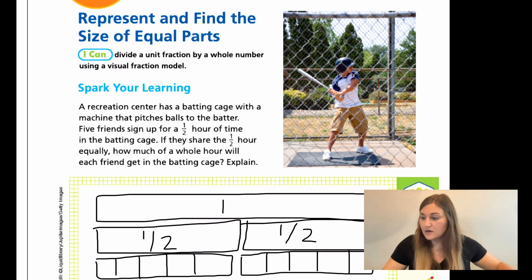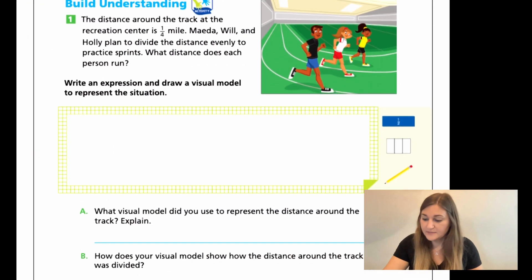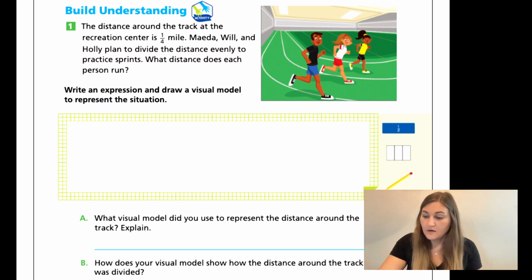Alright, let's go ahead and flip the page here. Now we're moving into page 244. We have a word problem that says the distance around the track at the recreation center is one fourth of a mile. Miera, Will and Holly plan to divide the distance evenly to practice sprints. What distance does each person run? This is a very similar problem that we just did. We're looking for the whole, but this time we have one fourth of a mile. So one fourth is our base instead of the half. And this time we have three friends instead of five friends. So the numbers are changing, but it's essentially the same type of problem.